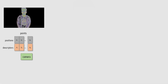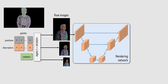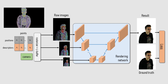To render a new view, we project points onto the novel view at several resolutions, using descriptor values as pseudo-color. A rendering convolutional network is then used to transform the multi-resolution rendering into a photorealistic image. To capture the appearance of a scene, we fit the descriptors and the rendering network parameters to a given set of views. The fitting uses back-propagation and minimizes the loss between the rendered views and the ground truth frames.